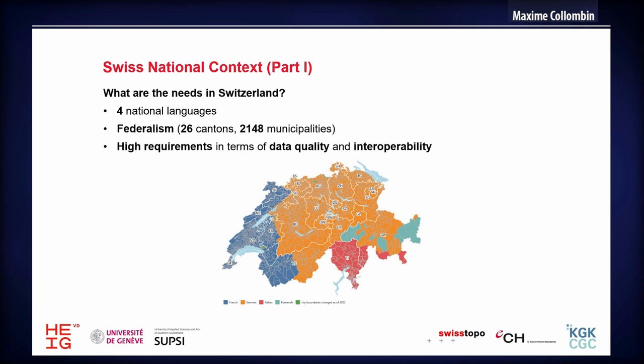What about the Swiss national context? You may know that there are four languages in Switzerland. That's a federalism system, meaning 26 cantons and 2,148 municipalities, and it involves high requirements in terms of data quality and durability.